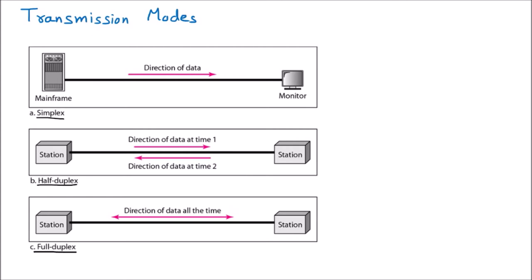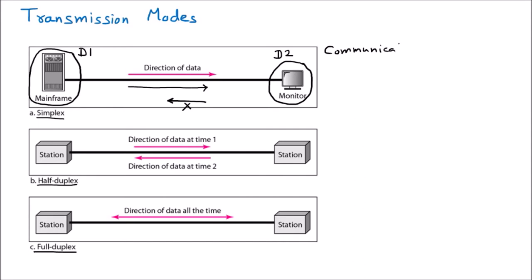Let us take the first example. Suppose this is some device one sending data to device two, but only in one direction. The data is transferring only in one direction — there is no chance of coming back. Data cannot come in the reverse direction. Such type of communication is called simplex.